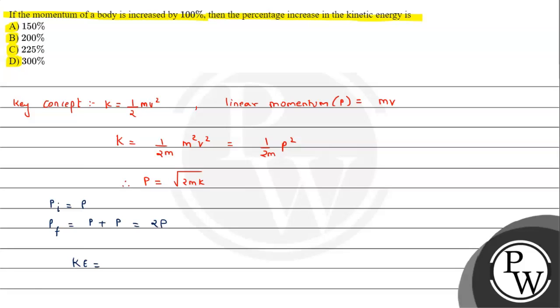Kinetic energy can be written as p square by 2m. Since here m is constant, what we can write is we can develop a relation: k final upon k initial will be equals to p final upon p initial squared.